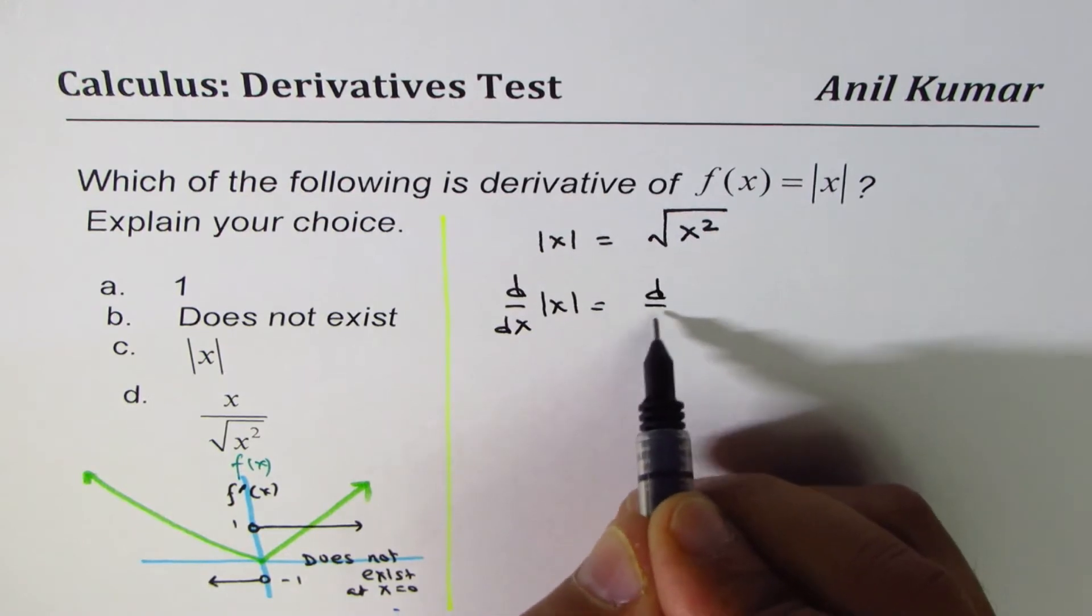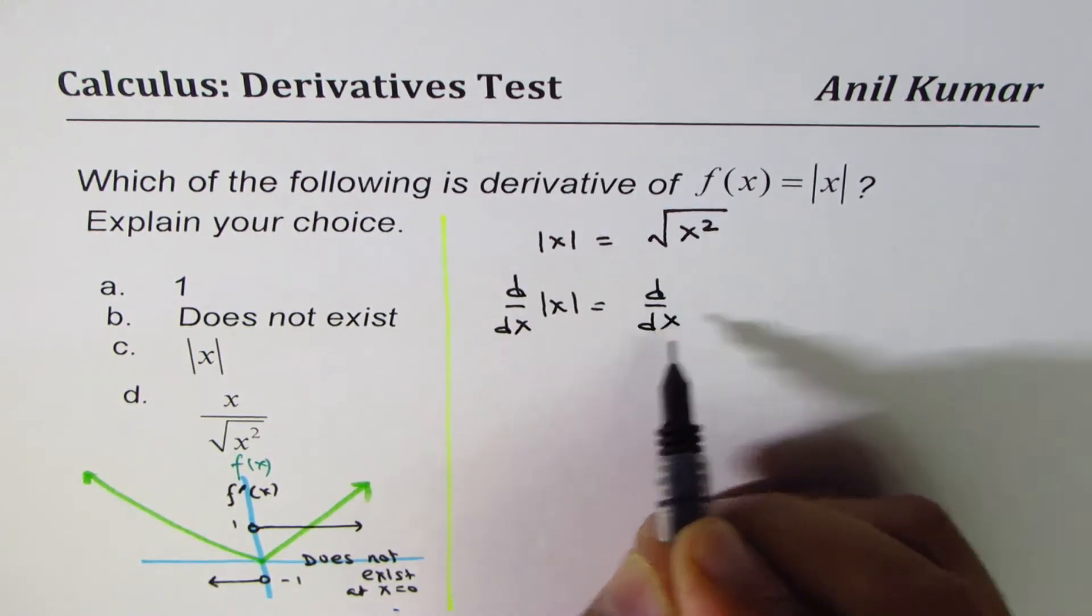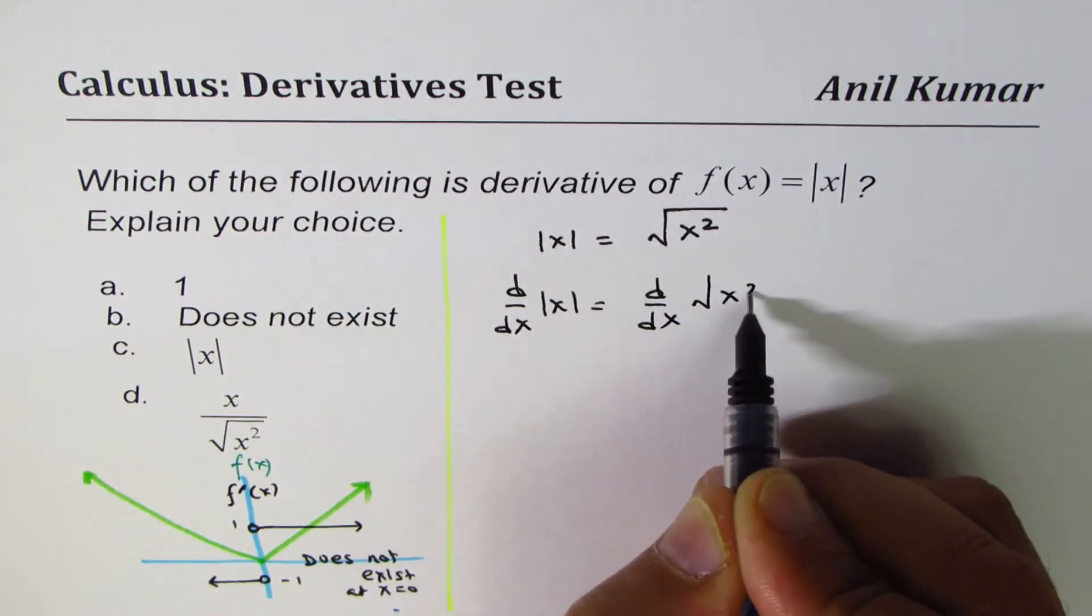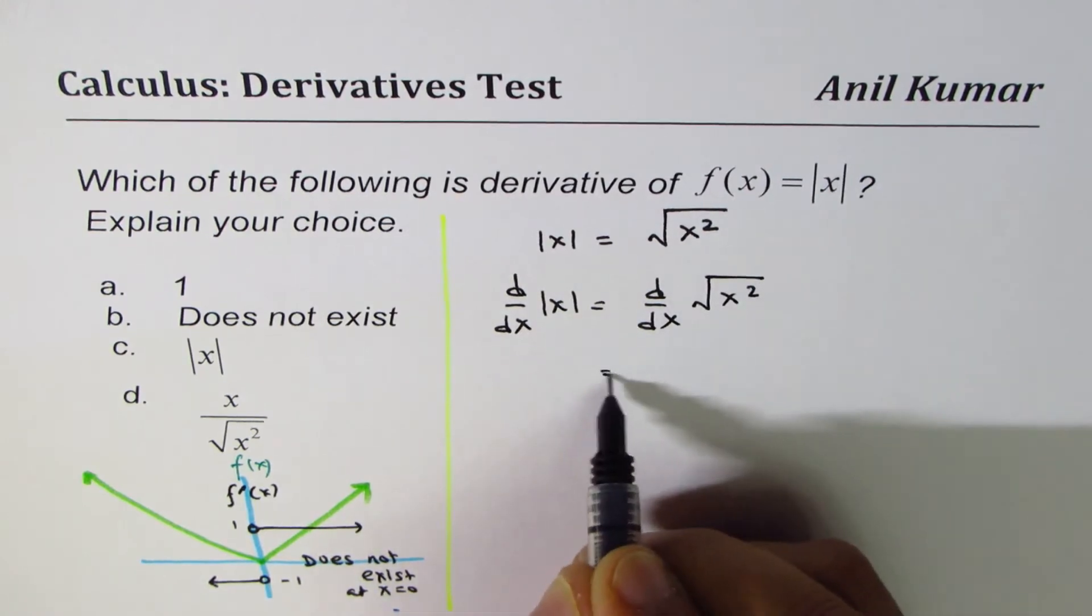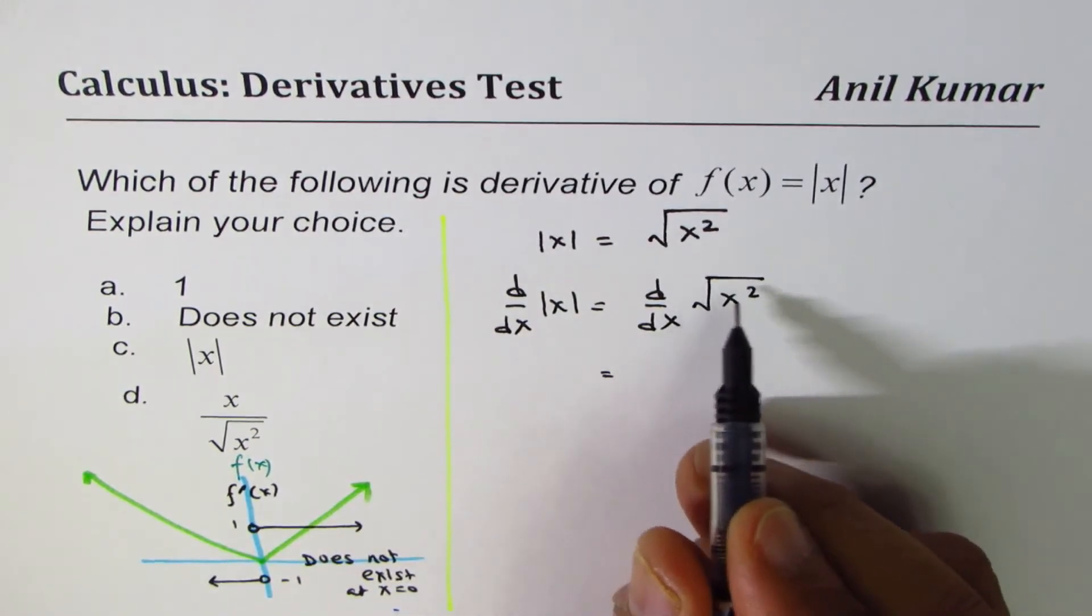is equals to derivative of square root of x squared, correct? So, what is the derivative of square root of x squared?